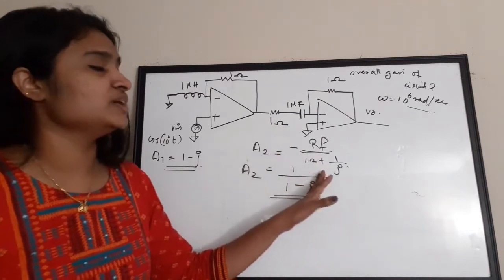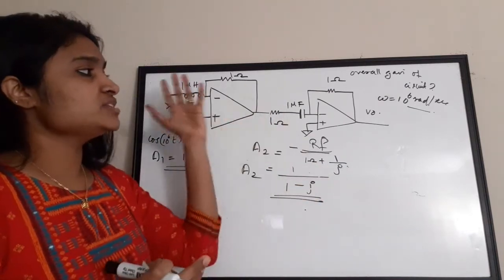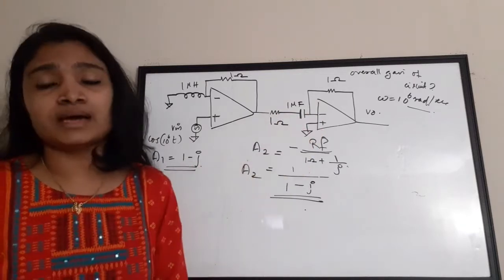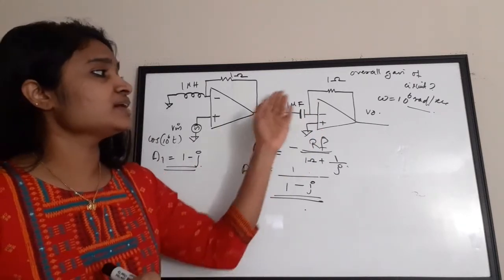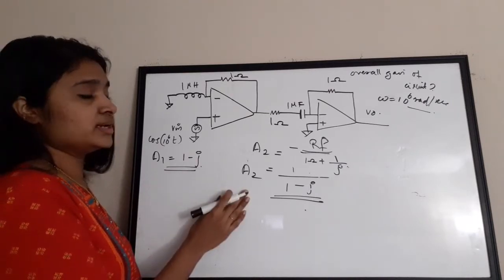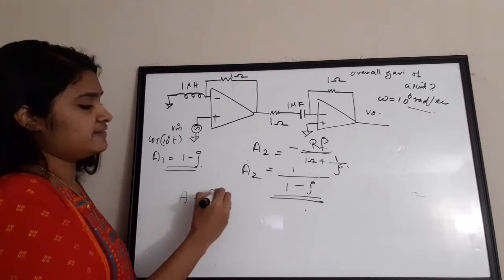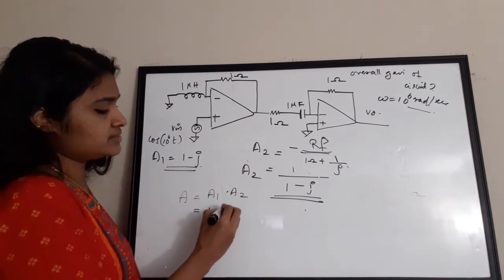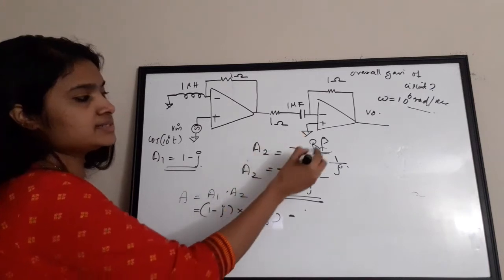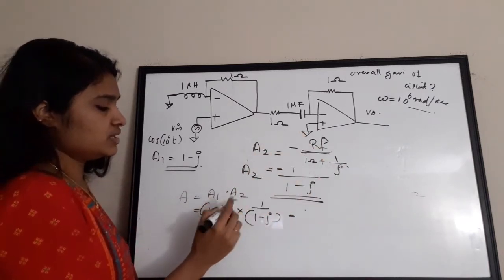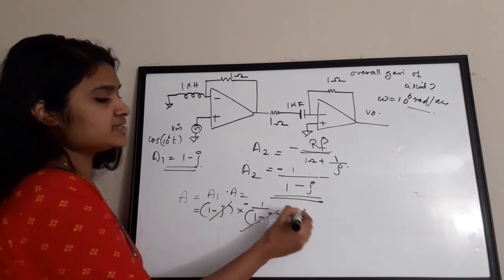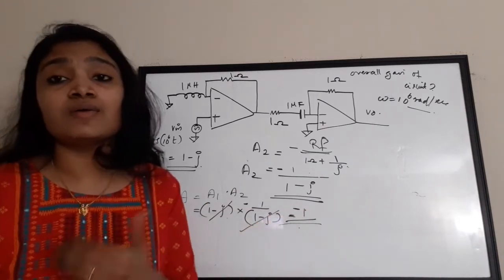The key point is that when capacitors and inductors are present, we replace Rf and Ri with their respective reactances in the gain equation. Overall gain A = A1 × A2 = (1 − j) × (−1/(1 − j)). The (1 − j) terms cancel, giving an overall gain of −1.